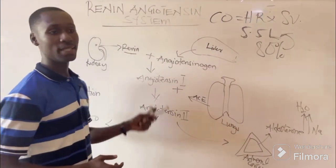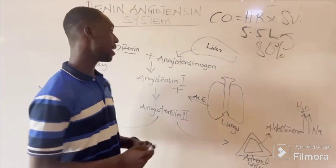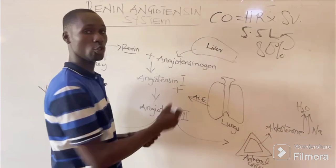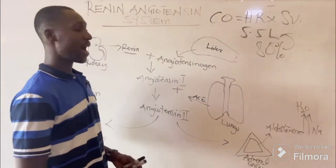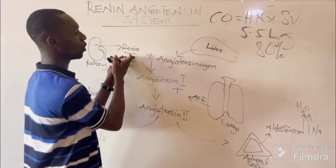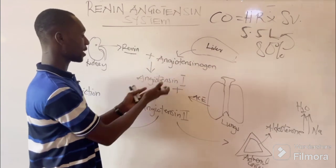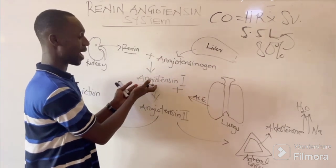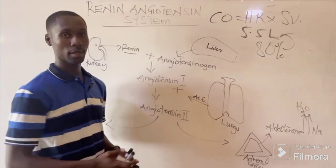Once the renin is released, the liver would also release angiotensinogen. Then the renin would act on the angiotensinogen to convert it to what we call angiotensin 1.